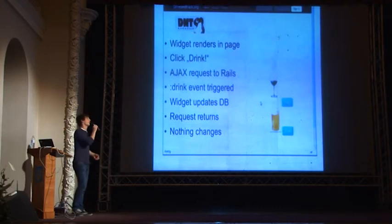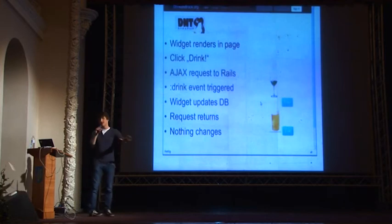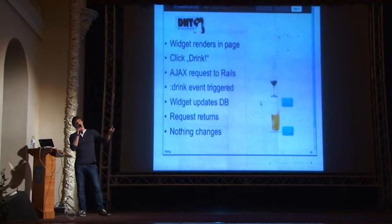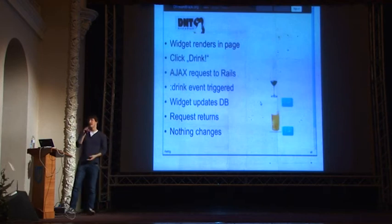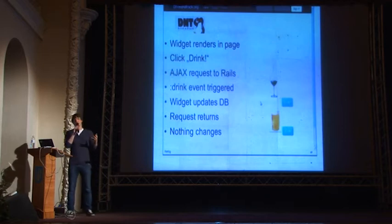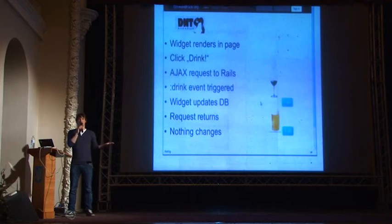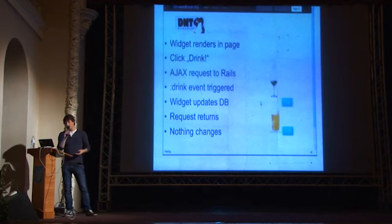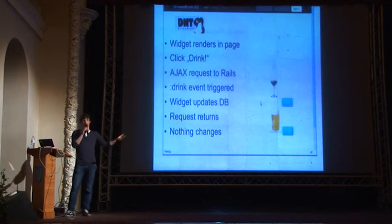What happens here is: I render the widget in the page, I click on the drink button, this calls JavaScript and sends an Ajax request to the Rails application. In the Rails application, Apodomo comes into play — the drink event is triggered. The drinks widget is looking for drink events, so it's called. The widget updates my drink list. Then the request returns to the browser and nothing changes yet.